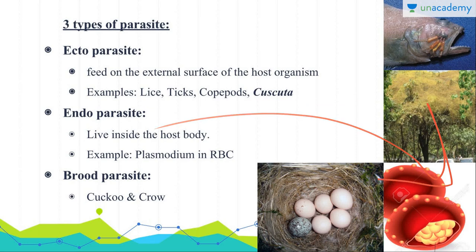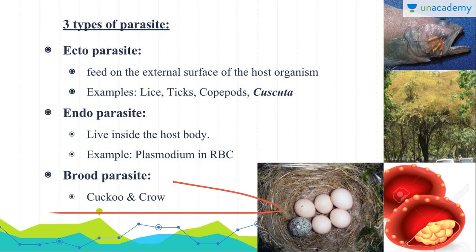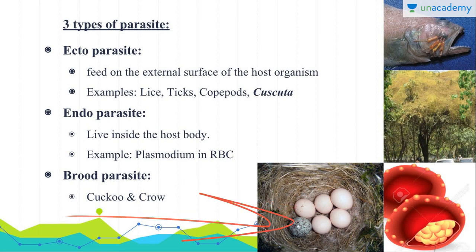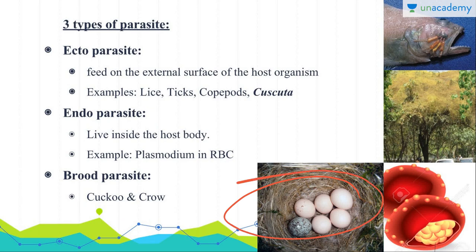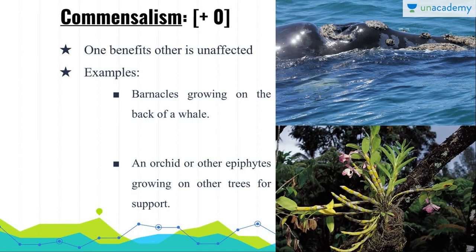Endoparasites live inside the host body, like Plasmodium in red blood cells. The brood parasite is an interesting example — the cuckoo lays its eggs in the crow's nest, and interestingly these eggs hatch five days earlier compared to the crow's eggs.